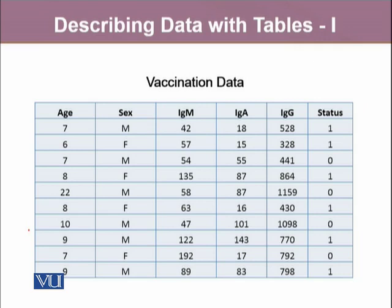For both categorical variables — that is sex and status — these variables are measured on a nominal scale of measurement. Whereas age, IgM, IgA, and IgG — all these four variables are measured on a ratio scale of measurement.